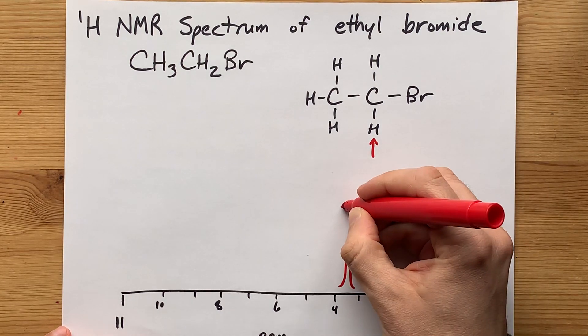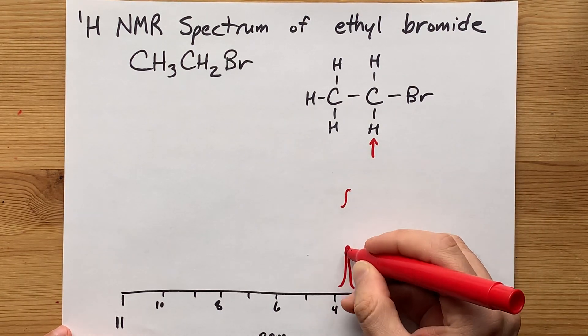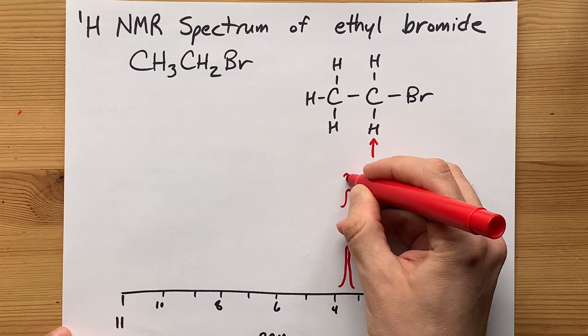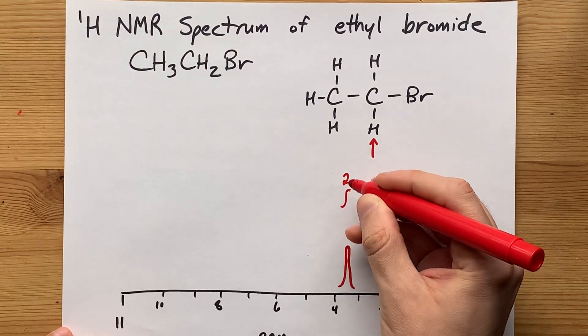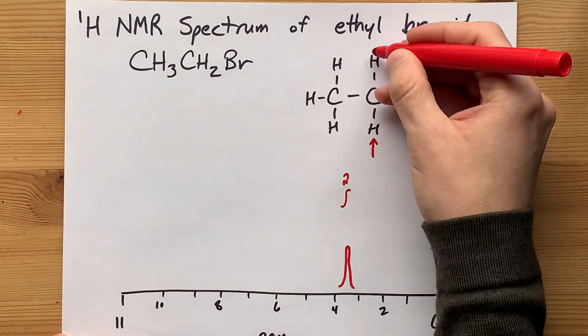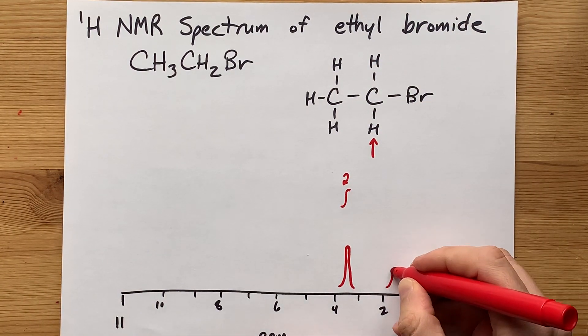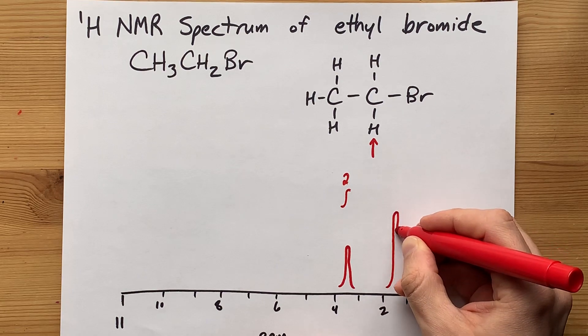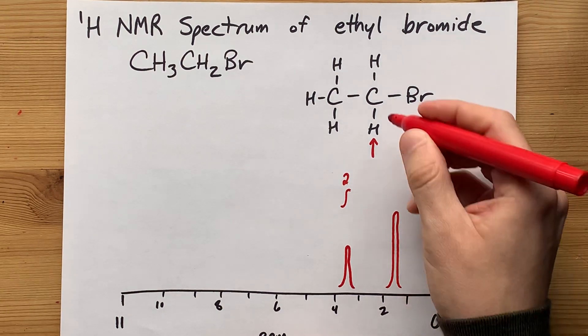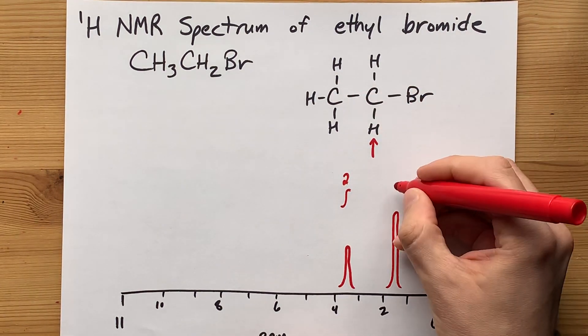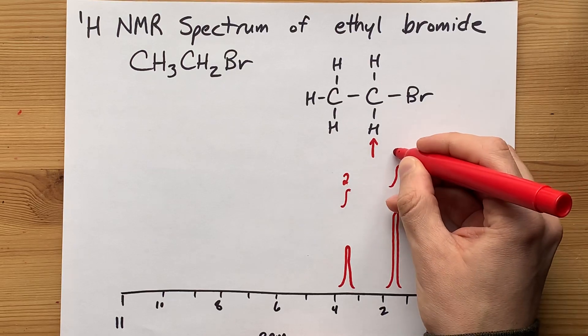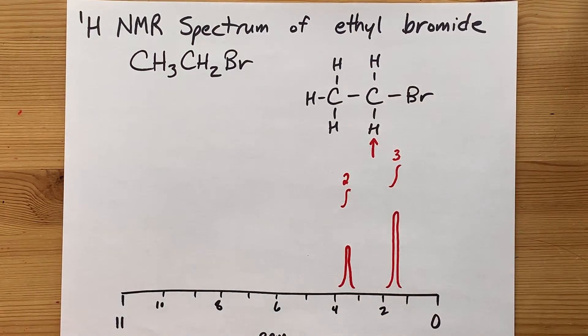What I mean is that the whole area under this peak is probably worth about 2. It's called the integrated area, and it's 2 because there's 2 hydrogens there. Then, that other peak, which I'm just putting a little closer to zero because it's further away from electronegative atoms, will integrate to 3. It's going to be a 3 to 2 ratio.